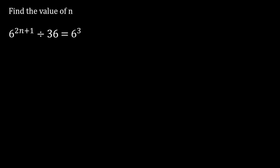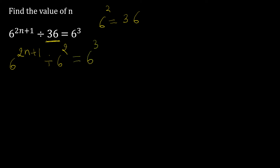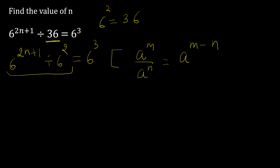Find the value of n: 6 raised to power (2n+1) divided by 36 equals 6 raised to power 3. We convert 36 to 6 raised to power 2. So we have 6^(2n+1) divided by 6² equals 6³. Now we can apply the law aᵐ ÷ aⁿ = aᵐ⁻ⁿ since the bases are the same.